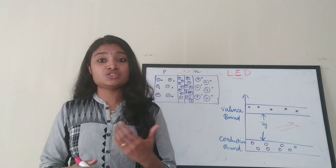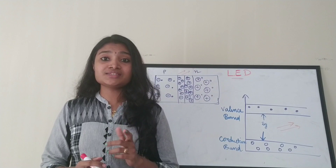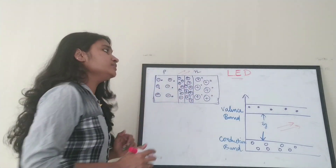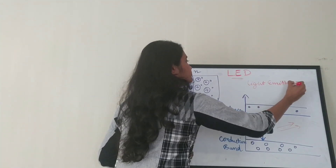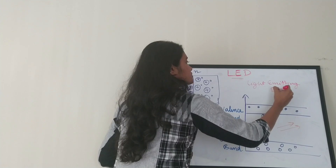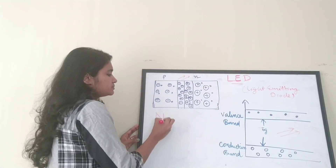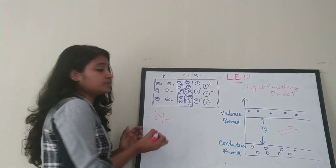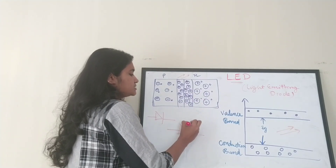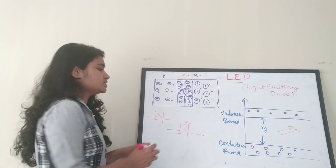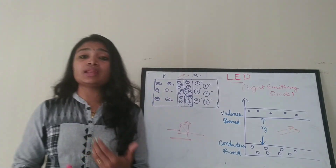We have already done a video on the P-N junction diode, so if you are not familiar with the concept, please do watch that video — I'll share the link in the description box. If you can represent a normal diode like this, then you can represent a light emitting diode like this, where the P-N junction emits light. This is the representation for a light emitting diode.